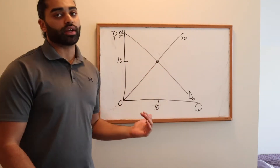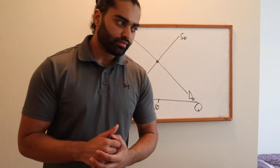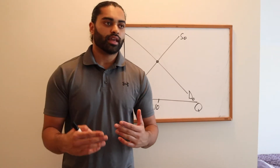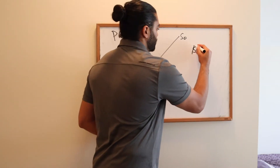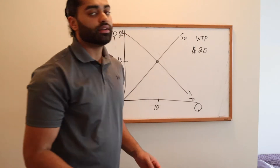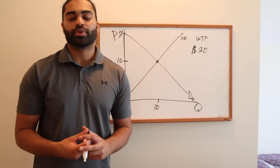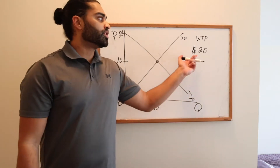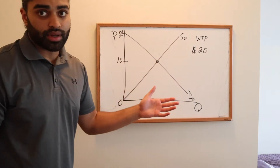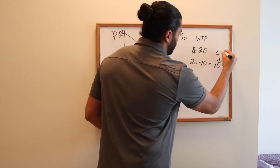Each point on the demand curve is a different individual's willingness to pay in this market. For example, let's say you're buying a six-pack of soda and it's $10. You came into the store thinking you have $20 — that's your willingness to pay (WTP). You're willing to spend $20, but the six-pack is $10. Would you purchase it? Yes, because you're willing to spend $20 and getting it for $10. The difference — $20 minus $10 equals $10 — we call this CS, consumer surplus.